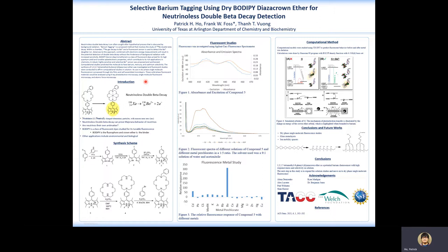Neutrinos are elementary particles that are not well understood. Further investigations of these particles can lead to greater understandings of astronomical phenomena. Neutrinoless double beta decay is a hypothetical process which involves measurements that is obscured by background radiation.